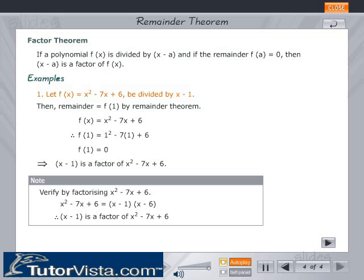Example 1: Let f(x) = x² − 7x + 6 be divided by (x − 1). Then the remainder equals f(1) by the remainder theorem. f(1) = 1² − 7 × 1 + 6 = 0. Since f(1) = 0, this implies that (x − 1) is a factor of x² − 7x + 6.